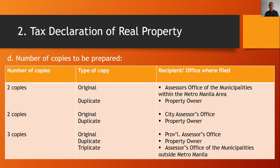Regarding the number of copies to prepare: for the assessor's office of municipalities in Metro Manila, submit two original copies; the property owner receives a duplicate copy. For the provincial assessor's office, submit three original copies; the property owner's copy is duplicate. For the assessor's office of municipalities outside Metro Manila, the third copy is triplicate.